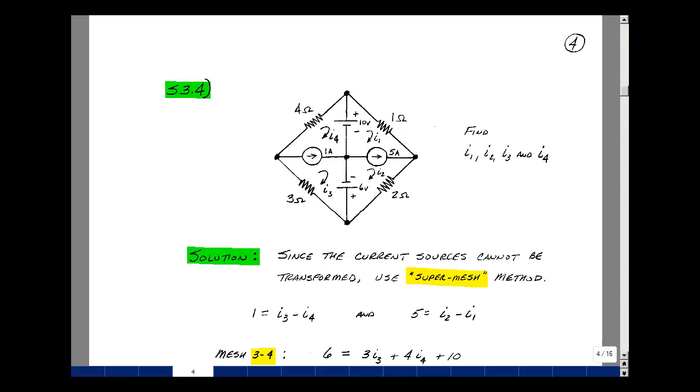So if we go around this current source, we have just voltage sources and resistances. We could write our mesh equations, and likewise around here. So you get two equations and then the four unknowns. The remaining two are from the current sources themselves. So let's form those first. The 1 amp current in this direction is equal to I3 minus I4. The 5 amps in this direction is equal to I2 minus I1. So those are my two equations in the four unknowns.